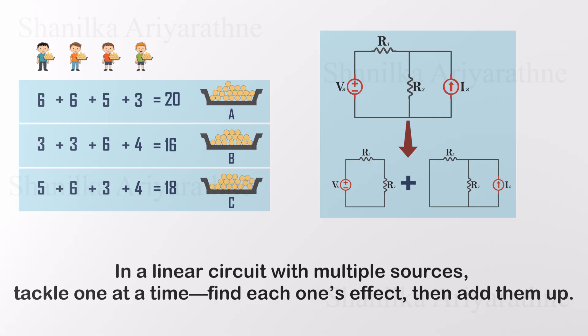We use the superposition theorem when a circuit has more than one power source, voltage sources, current sources, or both. Instead of analyzing the whole mess at once, we figure out what each source does on its own, then combine the effects.